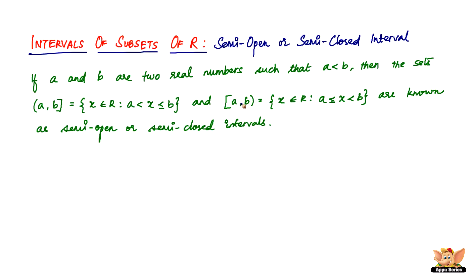Similarly, in the other case — written as square bracket A, B open bracket — X will be greater than or equal to A but only less than B, not equal to B. These are known as the semi-open or semi-closed intervals, and it's pretty much self-explanatory now that we've learned open interval and closed interval.